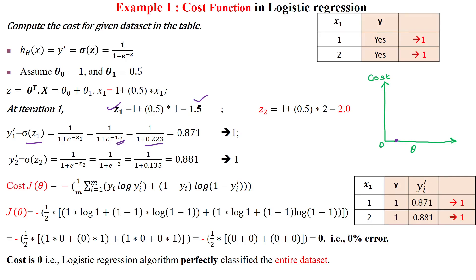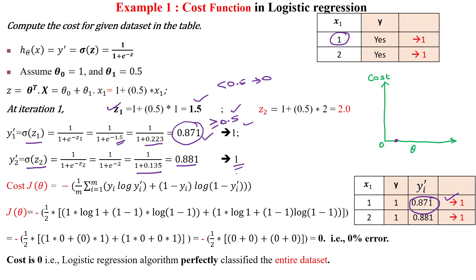Applying the values gives 0.871. In the sigmoid function, any value greater than or equal to 0.5 is converted to 1, and any value less than 0.5 is converted to 0. The sigmoid value for sample number 1 is 0.871, which is greater than or equal to 0.5, so it is converted to 1. For sample number 2, the sigmoid value is 0.881, which is also greater than or equal to 0.5, so it is also converted to 1. The actual output is 1 and predicted value is also 1 for both samples.